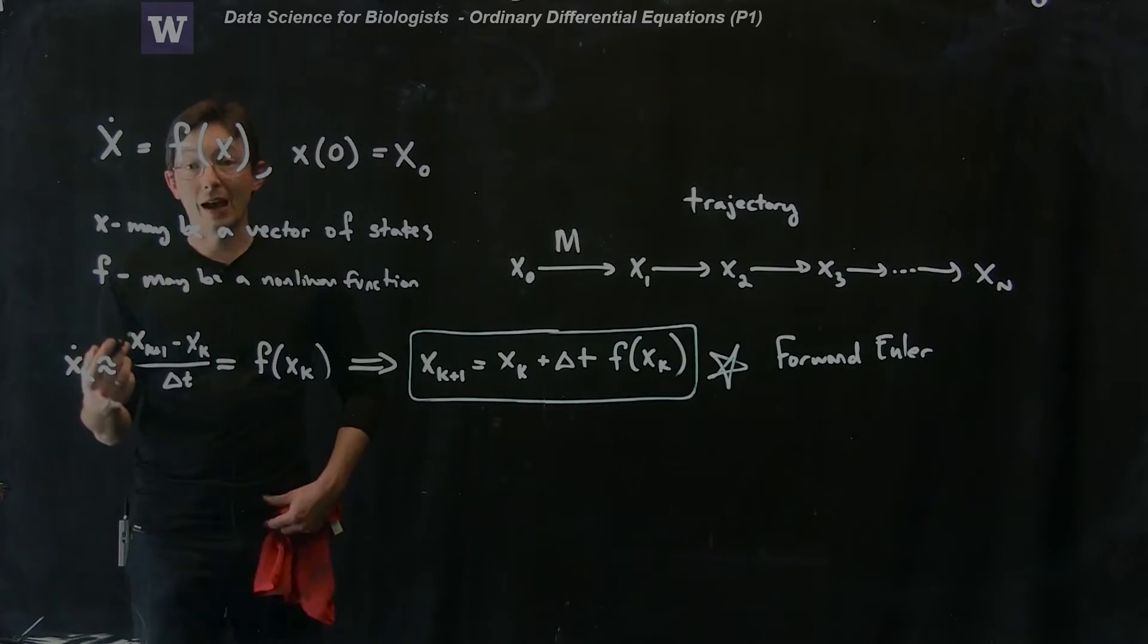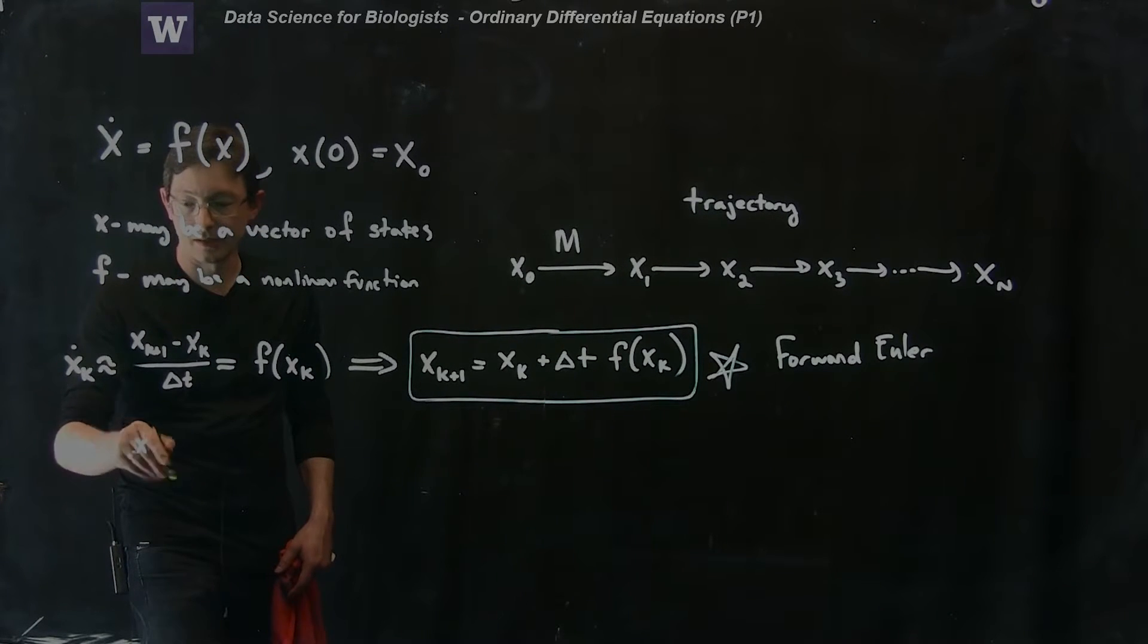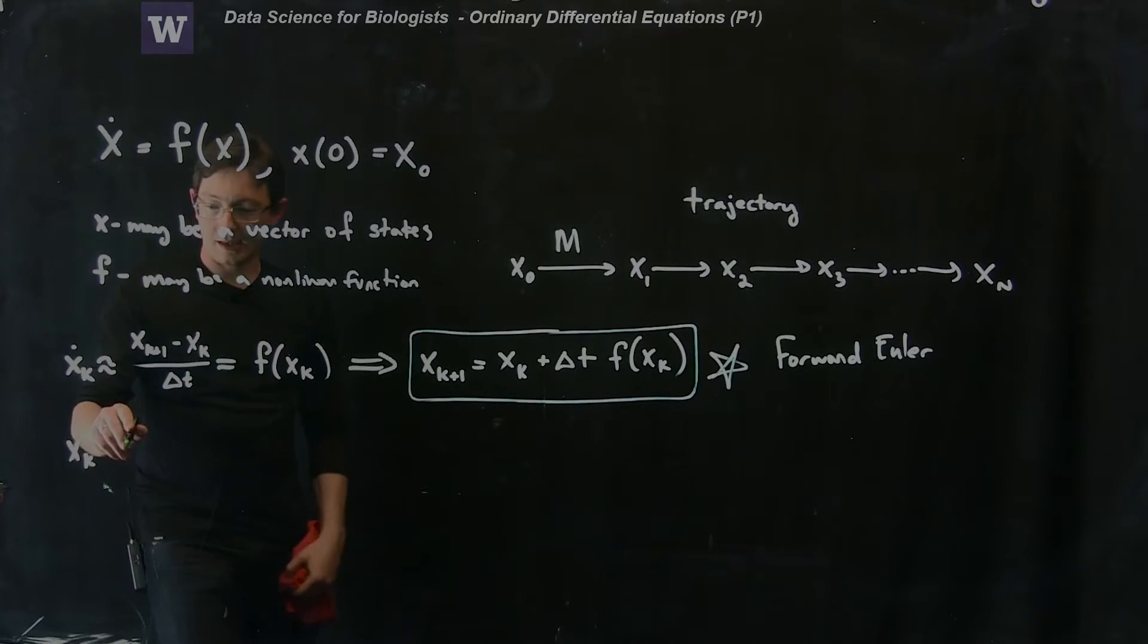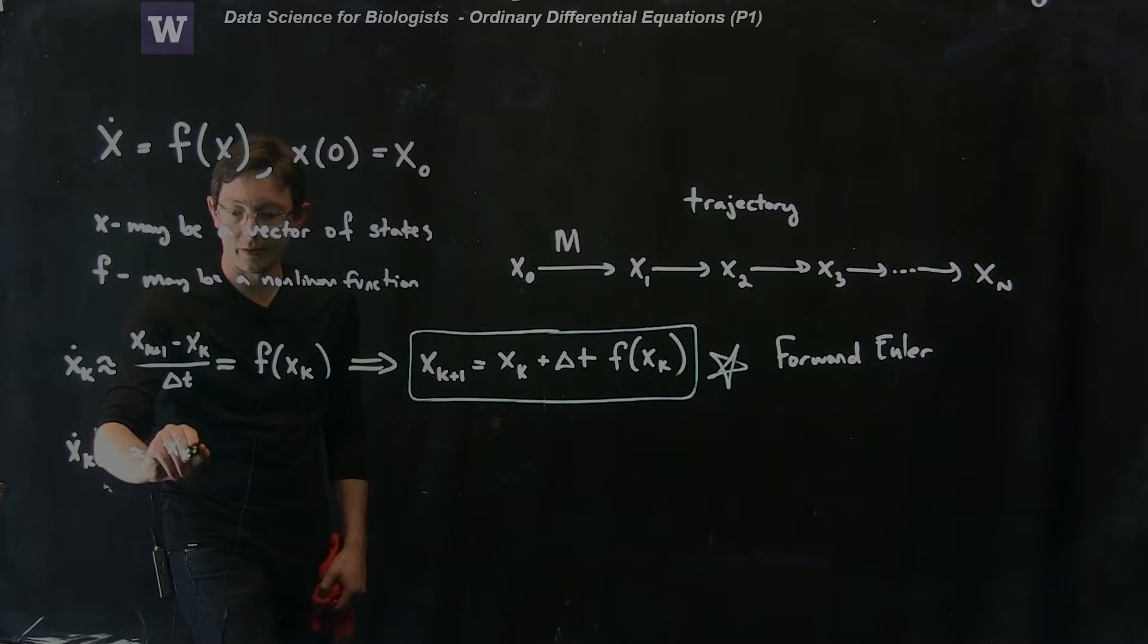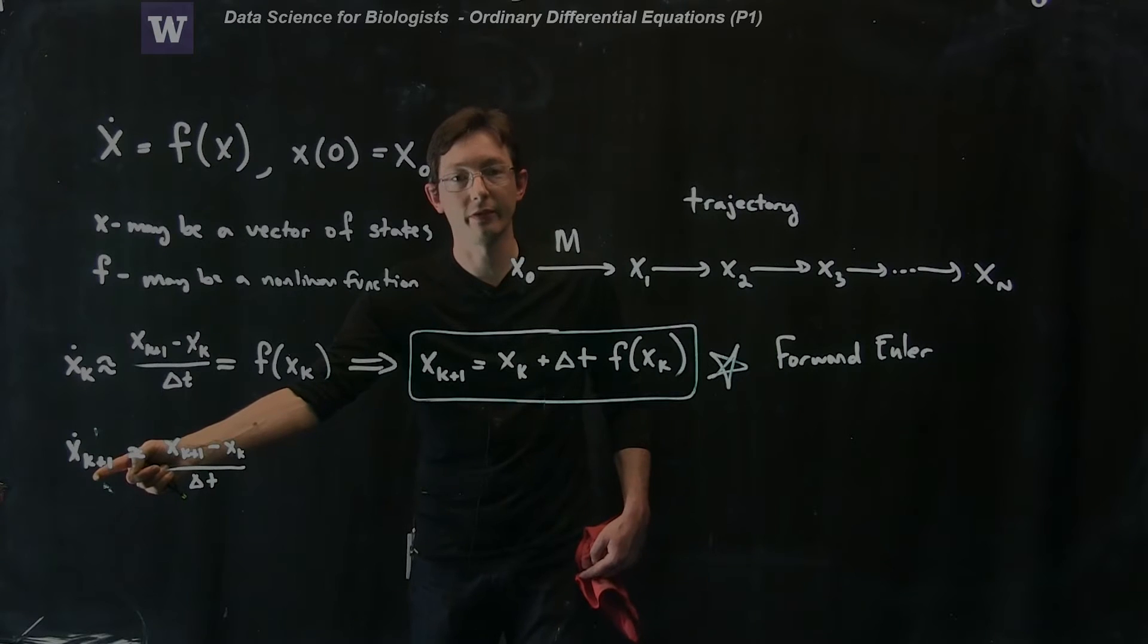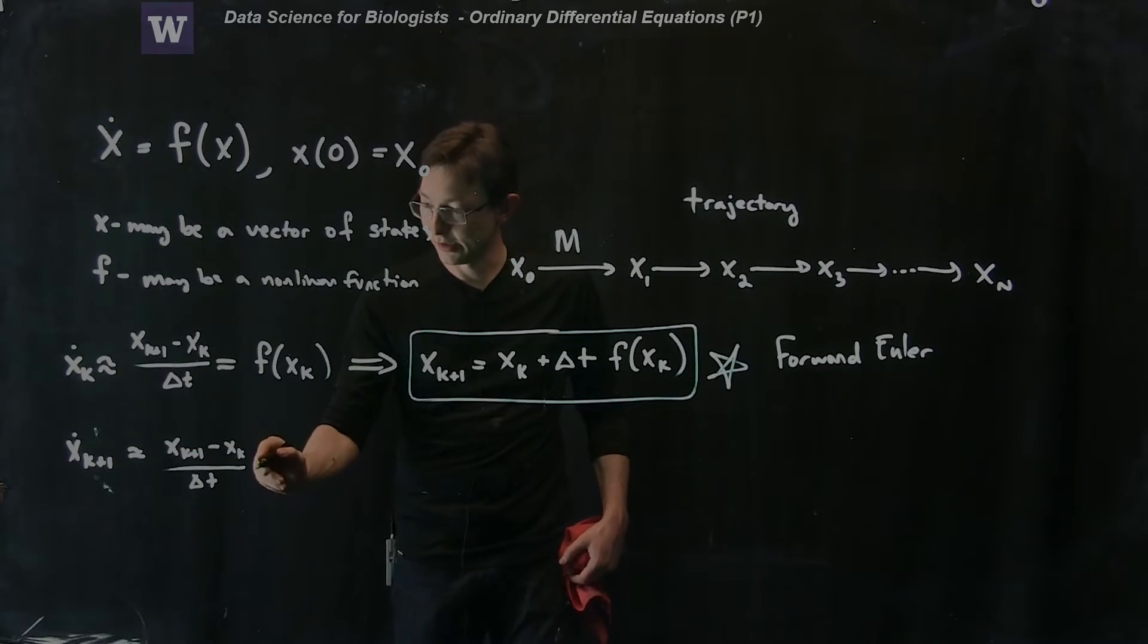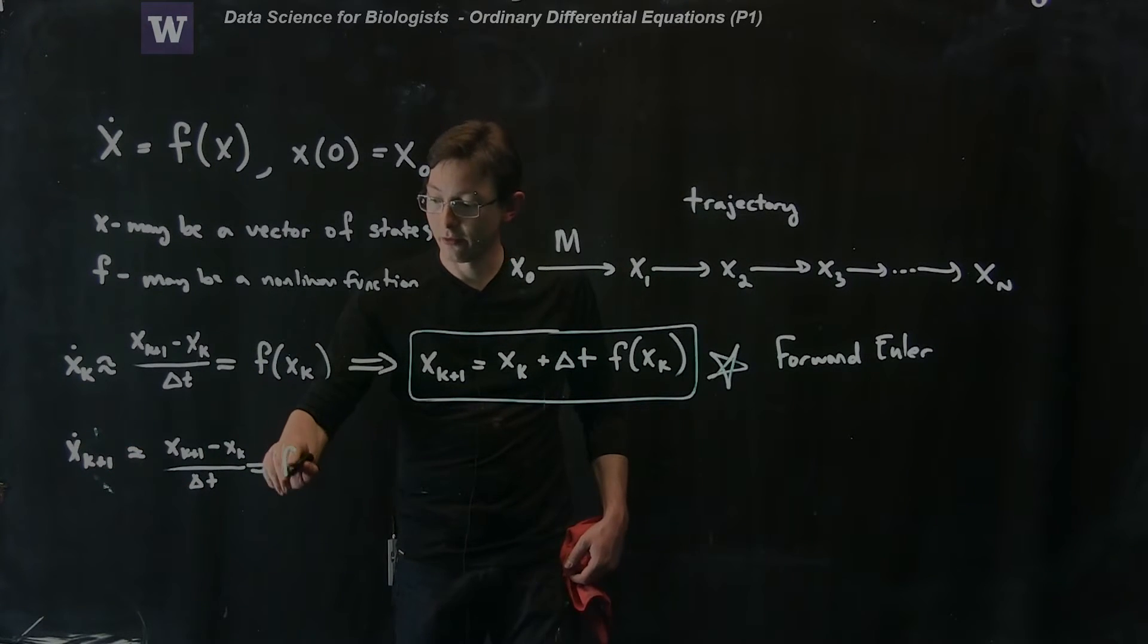And there's an analogous backward Euler. So I could also say that x_k dot is approximately equal to... well, let's use backward in the following way. Let's say that x_k plus 1 dot is approximately equal to x_k plus 1 minus x_k divided by delta t. So this is the backward difference derivative at time step k plus 1. Just verify that that makes sense.